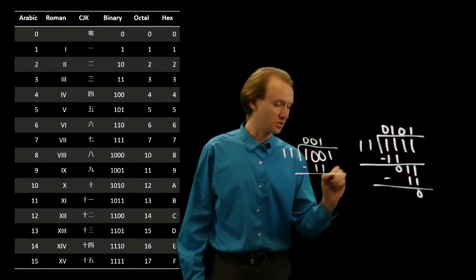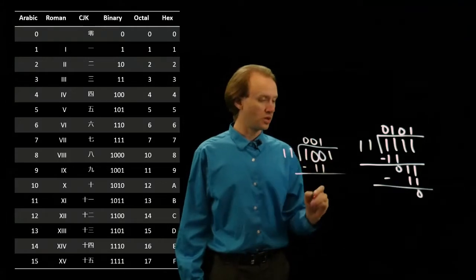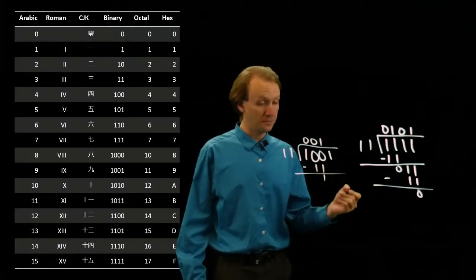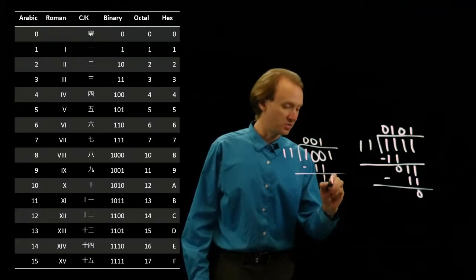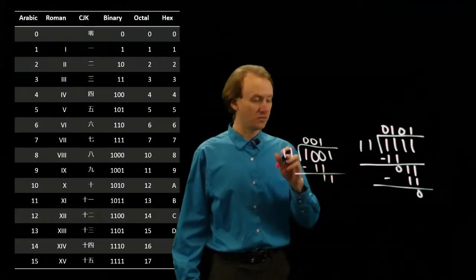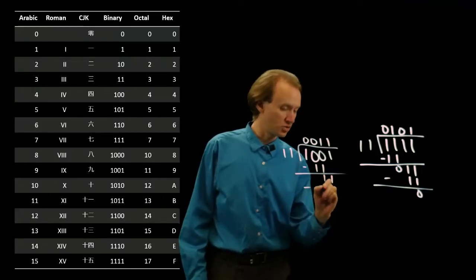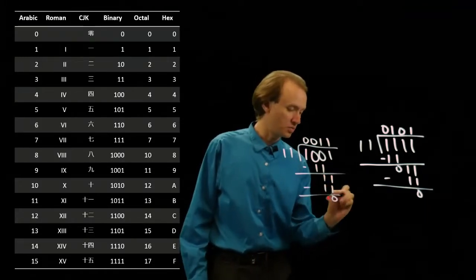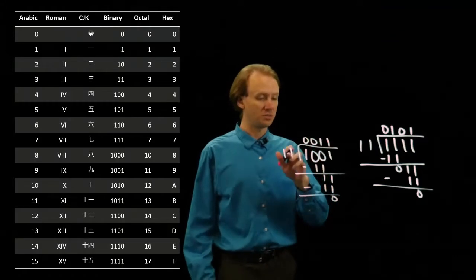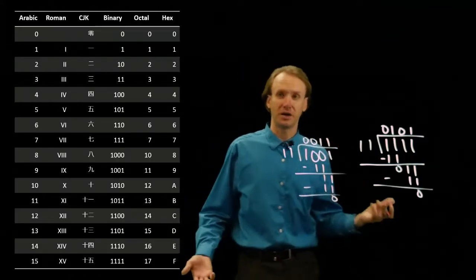And I'll subtract 11. So 100 minus 11 gives me 1. And then I'll pull down my next bit which is a 1. And I can see that 11 does go into 11 exactly one time. Subtract the 11 and I'm left with 0. So 3 times 3 is 9 in binary.